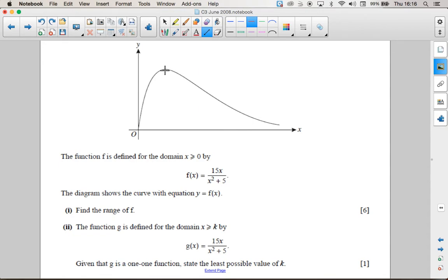Okay, for part 2, I'm just going to go through what we found in part 1 again. We found that this stationary point here occurs when x equals root 5 and when y equals 3 root 5 over 2.